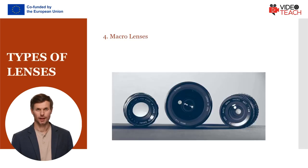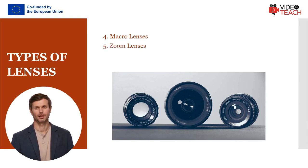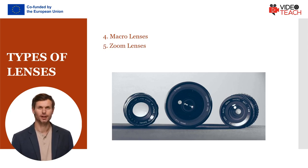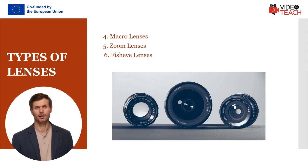Macro lenses are designed for extreme close-up photography, capturing intricate details of small subjects like insects, flowers, or other objects. They often have a one-to-one reproduction ratio, producing life-sized images. Zoom lenses have a variable focal length, providing flexibility to zoom in and out. They are versatile and suitable for a wide range of scenarios, offering convenience when framing shots without changing lenses. Fish-eye lenses have an extremely wide field of view, creating a distorted, spherical perspective. They are popular for creative and artistic shots, such as capturing unique angles in architecture or creating visually striking compositions.